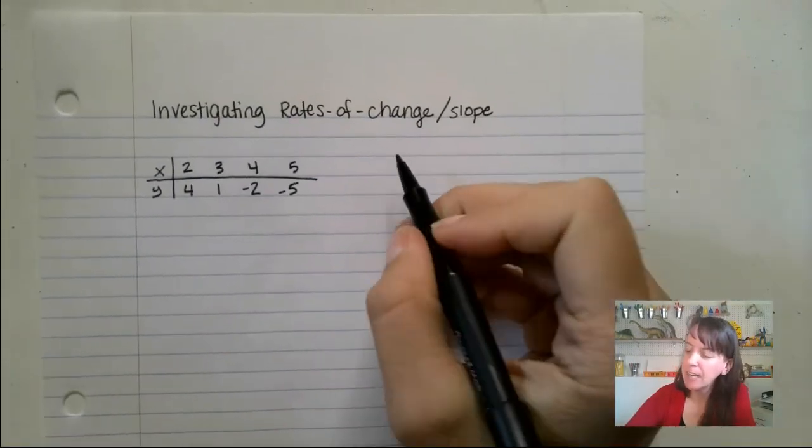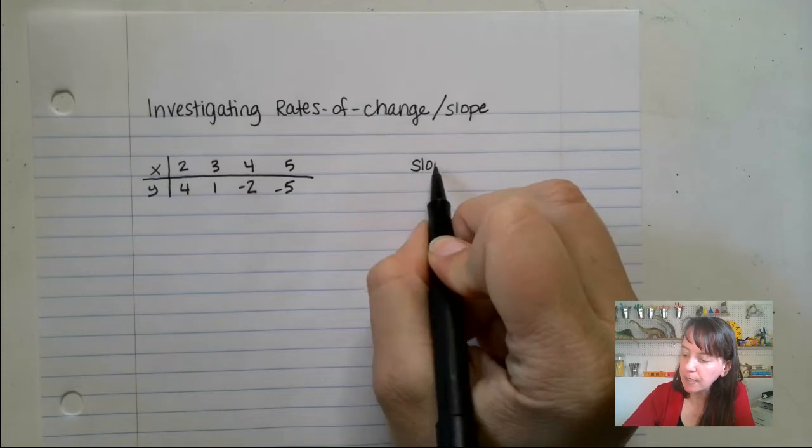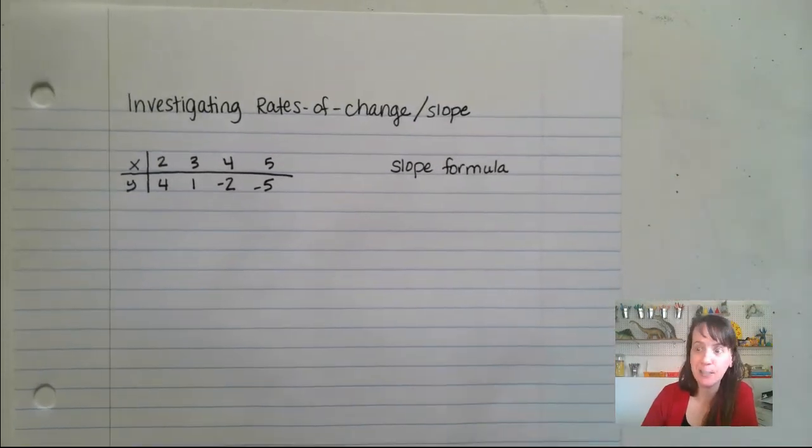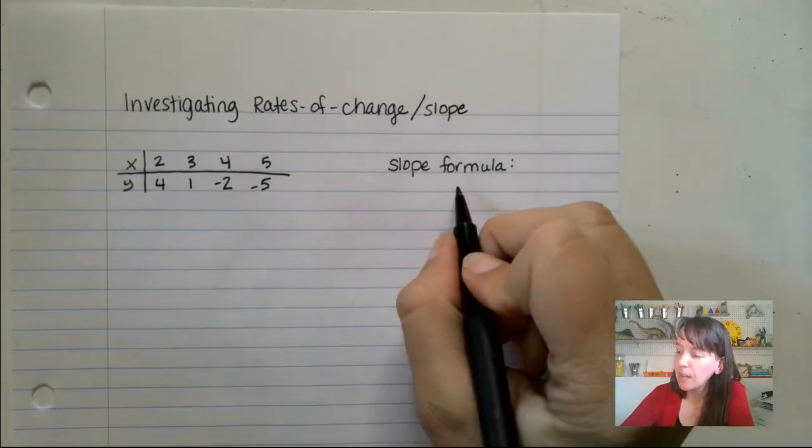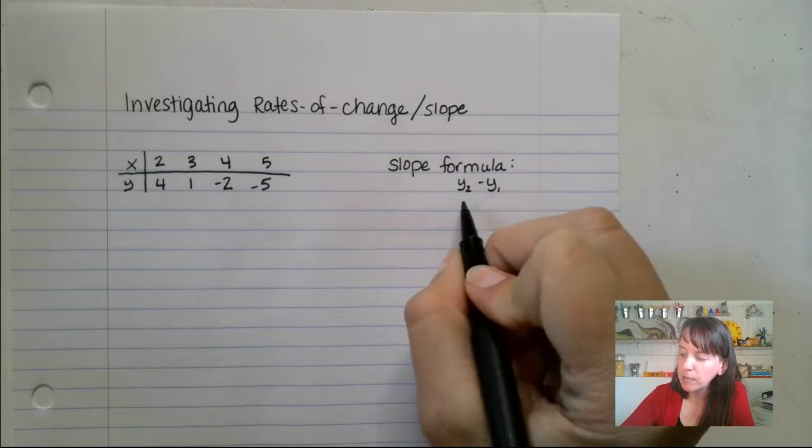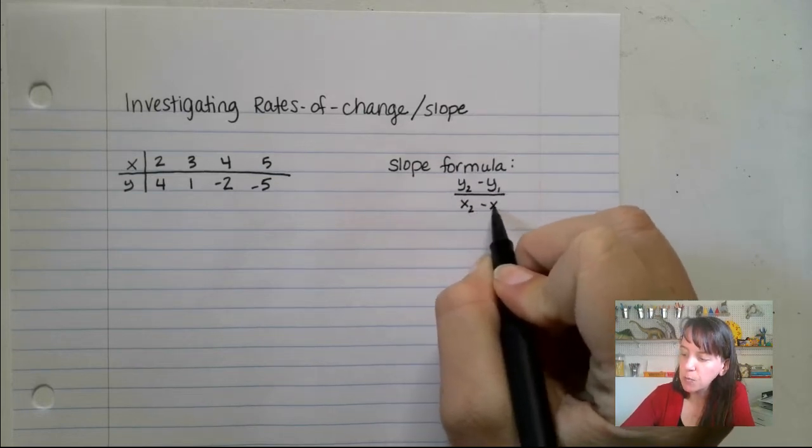We've got a table here. So our slope formula, and remember to grab your notebook and write these notes down in your notebook. Our slope formula is going to be y2 minus y1 over x2 minus x1.